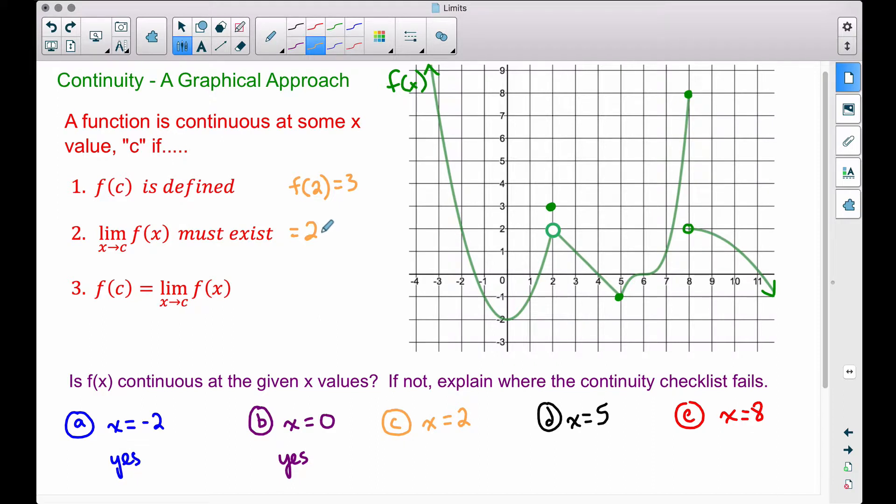Here's where the continuity checklist fails. Because these two pieces that we got here, f(c) or f(2) we said was 3 and the limit is 2. For a function to be continuous at a particular x value, in this case 2, these two values have to be equal. And as we can see here,